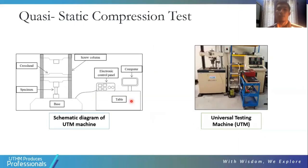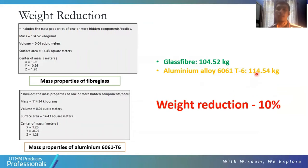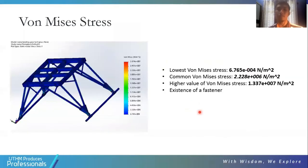We also conducted a quasi-static compression test using the UTM machine. For the results and discussion, implementing glass fiber into the landing gear reduces the structural weight to 104.52 kg compared to aluminium alloy 6061 at 140.54 kg, showing that substituting glass fiber into the landing gear can reduce the drone's structural weight by approximately 10 percent.